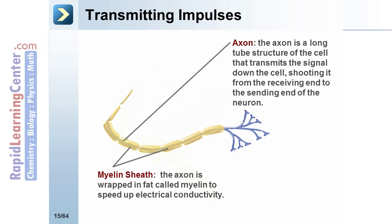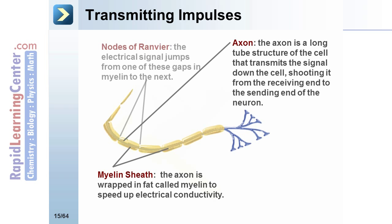Myelin sheath: the axon is wrapped in fat called myelin to speed up electrical conductivity. Nodes of Ranvier are gaps in the myelin, and the electrical signal jumps from one gap to the next.